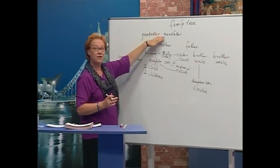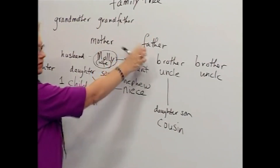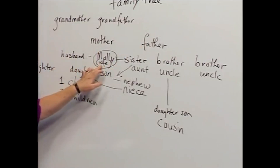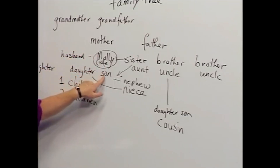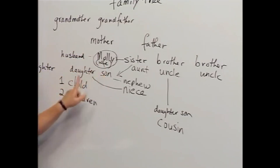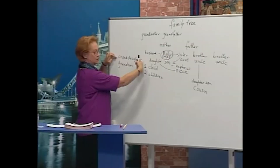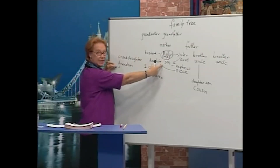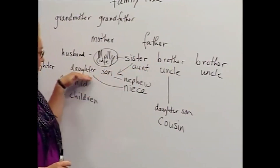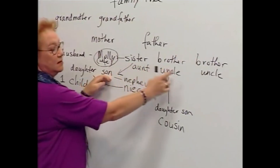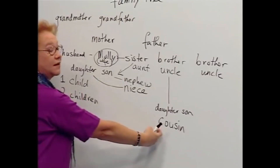So: grandmother, grandfather, mother, father, husband, wife — husband and wife — daughter, son. One child, two children. Granddaughter, grandson. Now we have the aunt of the daughter and son: aunt, uncle, uncle. Nephew, niece. And cousins.